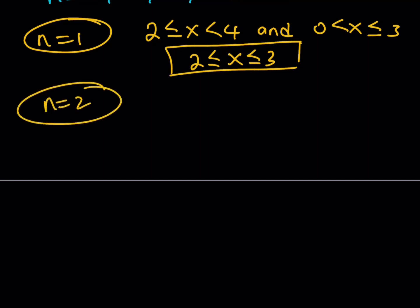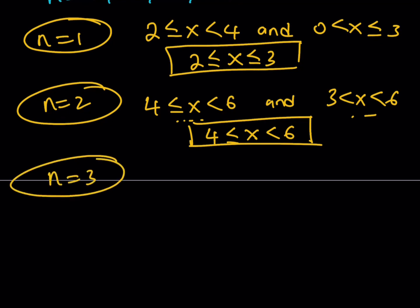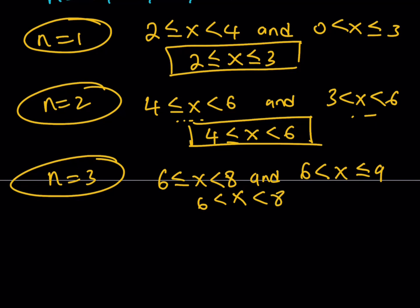If n equals 2, substituting gives x between 4 and 6, and x between 3 and 6. The intersection is x between 4 and 6, where x can equal 4 but not 6. For n equals 3, x needs to be between 6 and 8, and between 6 and 9. The intersection is x between 6 and 8, not inclusive.